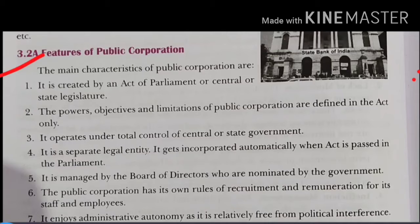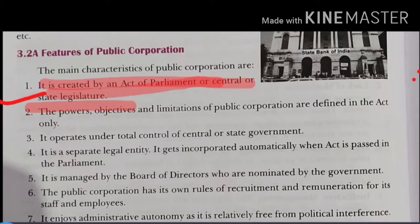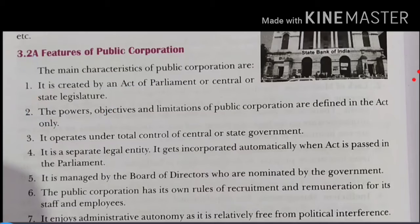Now we are going to discuss the features — what are the things found in a public corporation? The first feature is that it is created by an act of Parliament by the Central Legislature. How does it exist? One act is passed in Parliament — that is how it exists.